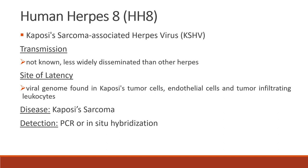Lastly, we have human herpesvirus 8 or the Kaposi sarcoma-associated herpesvirus. The transmission is not well known and it is less widely disseminated than other herpesviruses. The site of latency is the viral genome found in Kaposi's tumor cells, interstitial cells, and tumor-infiltrating leukocytes. The disease is Kaposi's sarcoma and can be detected through PCR or in-situ hybridization.